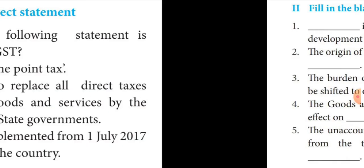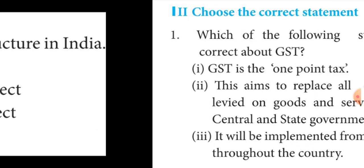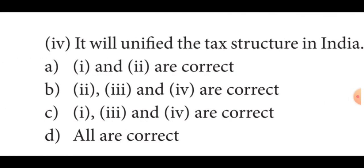Choose the correct statement — which of the following is correct about GST? GST is a one-point tax aiming to replace all indirect taxes on goods and services by central and state governments. Answer is C option — statements 1, 3, and 4 are correct.